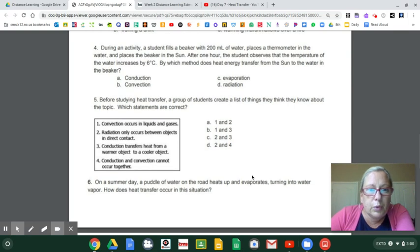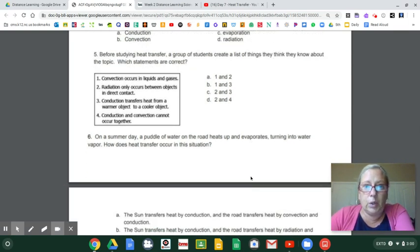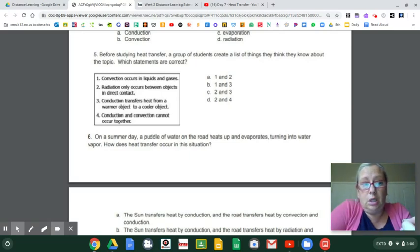Number five. Before studying heat transfer, a group of students create a list of things they think they know about the topic. Which statements are correct? So convection occurs in liquids and gases. Is that true? Conduction, touch, convection, air, water, atmosphere. Air is a gas. Water is liquid. Convection, liquid gases. So is one true? Yeah, it is because it says convection is in liquids and gases. So no matter what, now, y'all, look, it has to be either A or B because I know that convection is in liquids and gases. And then C and D don't have one as one of the choices. So that narrows it down really well.